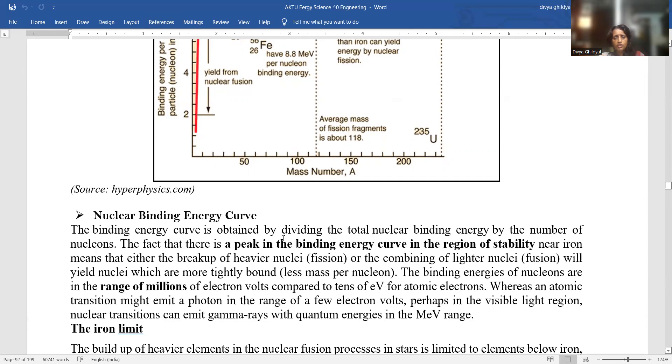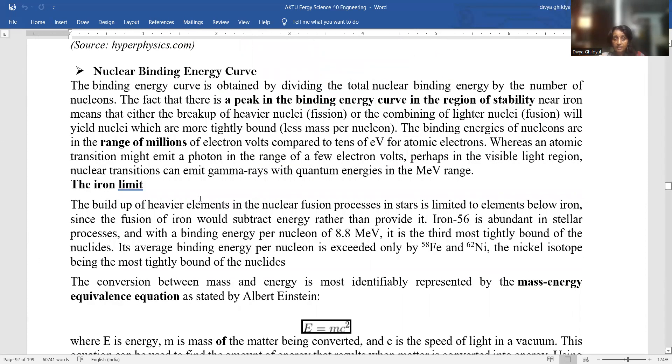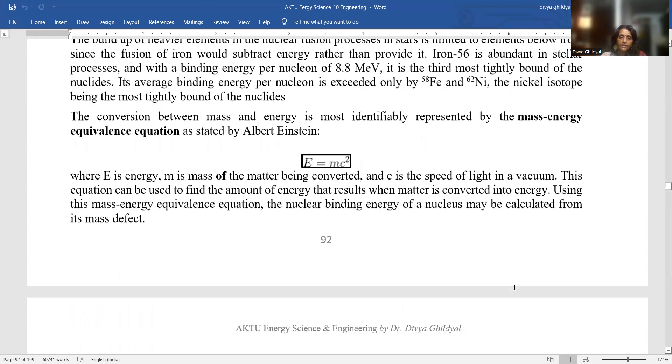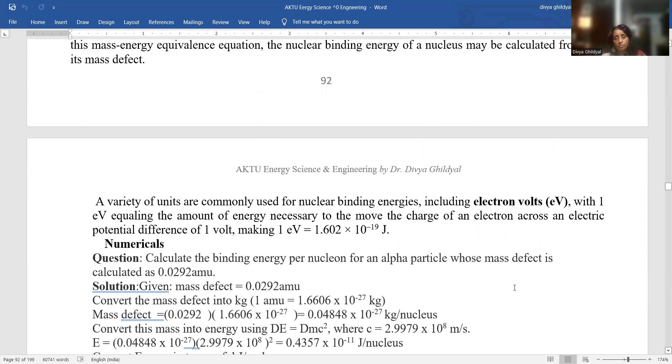The binding energy of nucleons are in the range of millions of electron volts compared to tens of electron volts. Whereas an atomic transition might emit a photon, the iron limit, the build up of heavier elements in the nuclear fusion process in stars is limited to elements below iron since the fusion of iron would subtract energy rather than provide it. And the conversion between mass and energy is most identically represented by the mass energy equivalence given by Albert Einstein, E equal to mc squared, where m is that mass of matter which has been converted, c is the speed of light in vacuum. A variety of units commonly used for nuclear binding energy include electron volts with one electron equaling the amount of energy necessary to move the charge of an electron across an electric potential.